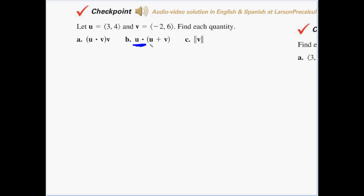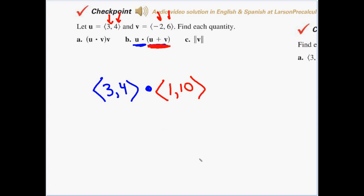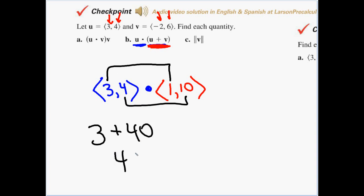Letter b: we're going to dot u with the sum of u and v. So u is (3, 4). Adding the components of u and v: three plus negative two is one, four plus six is ten. So our two vectors are (3, 4) and (1, 10). Dotting: three times one is three, plus four times ten is forty. Answer: forty-three.